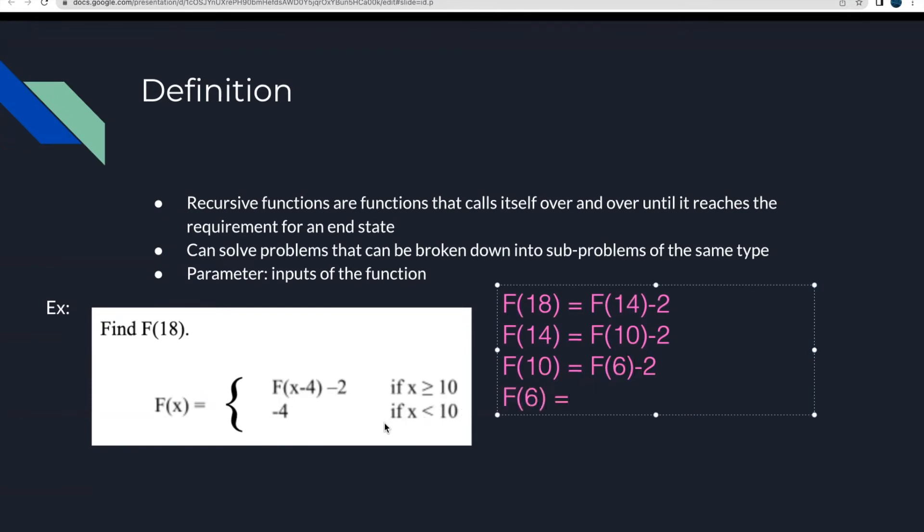So we're going to go to this next if statement here. And it says if x is less than 10, then the value is just negative 4. So F of 6 is negative 4.